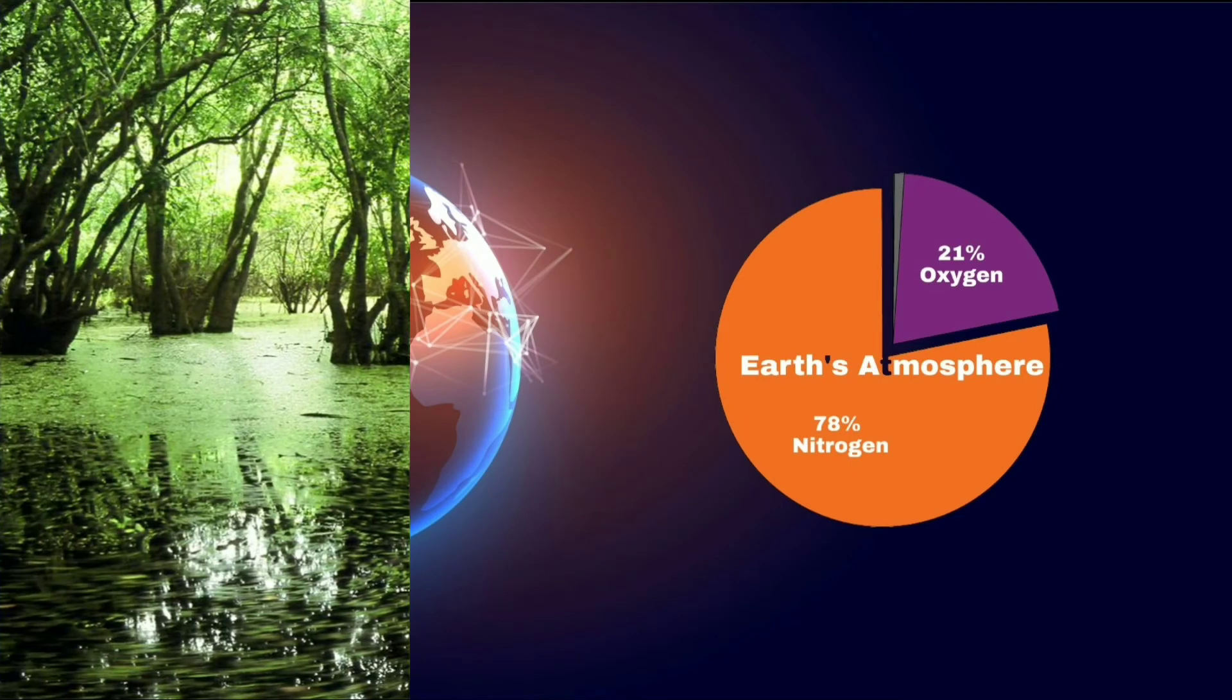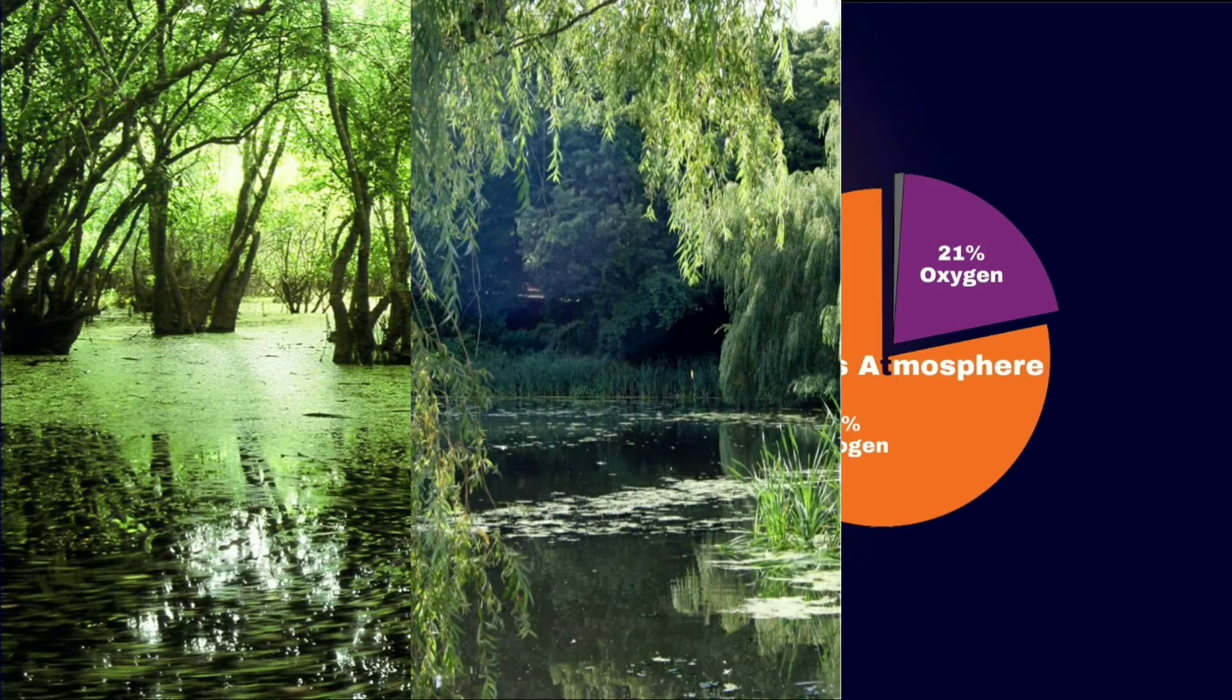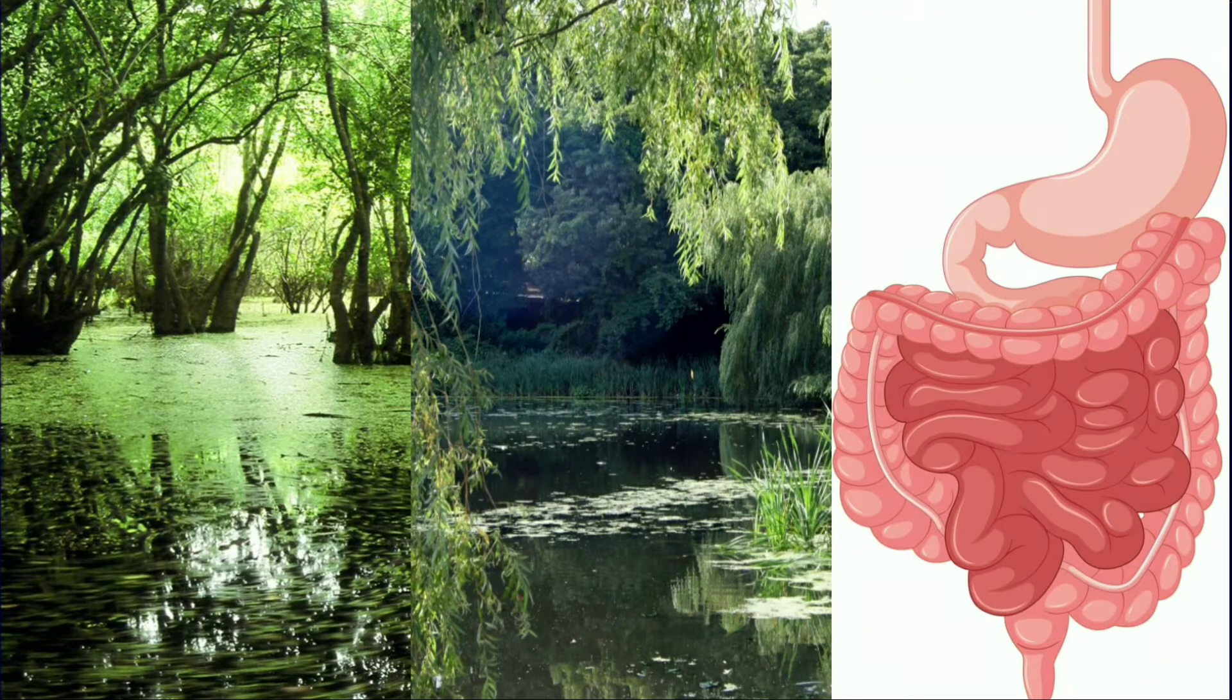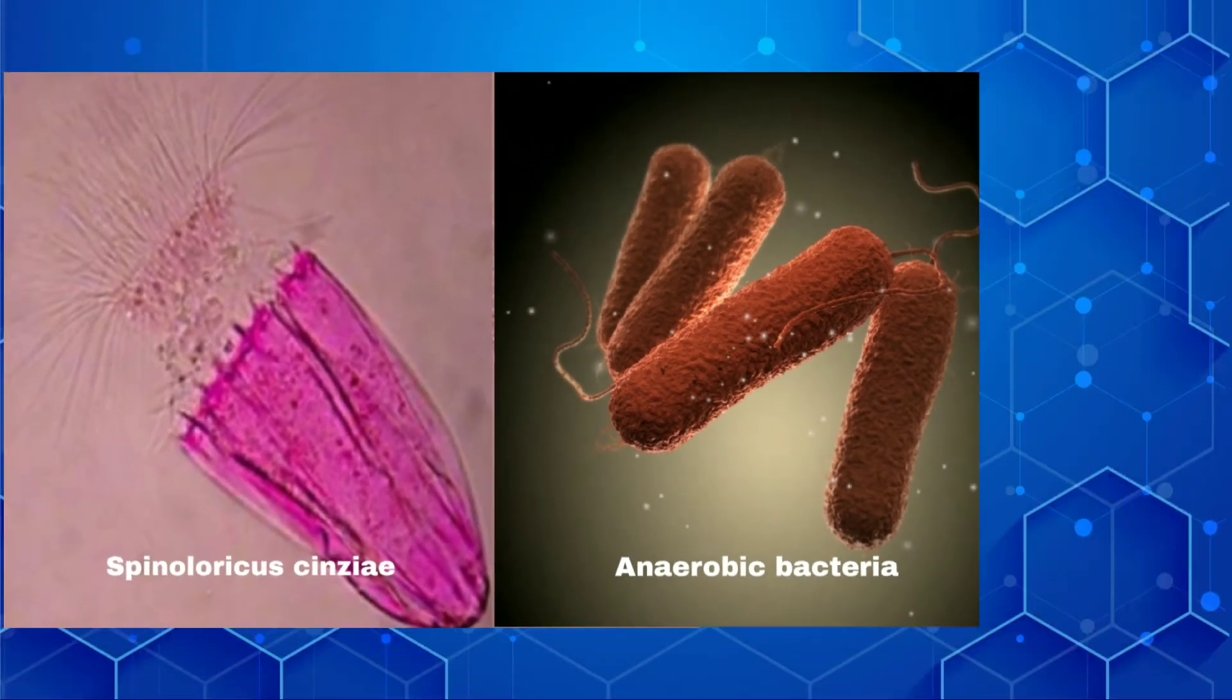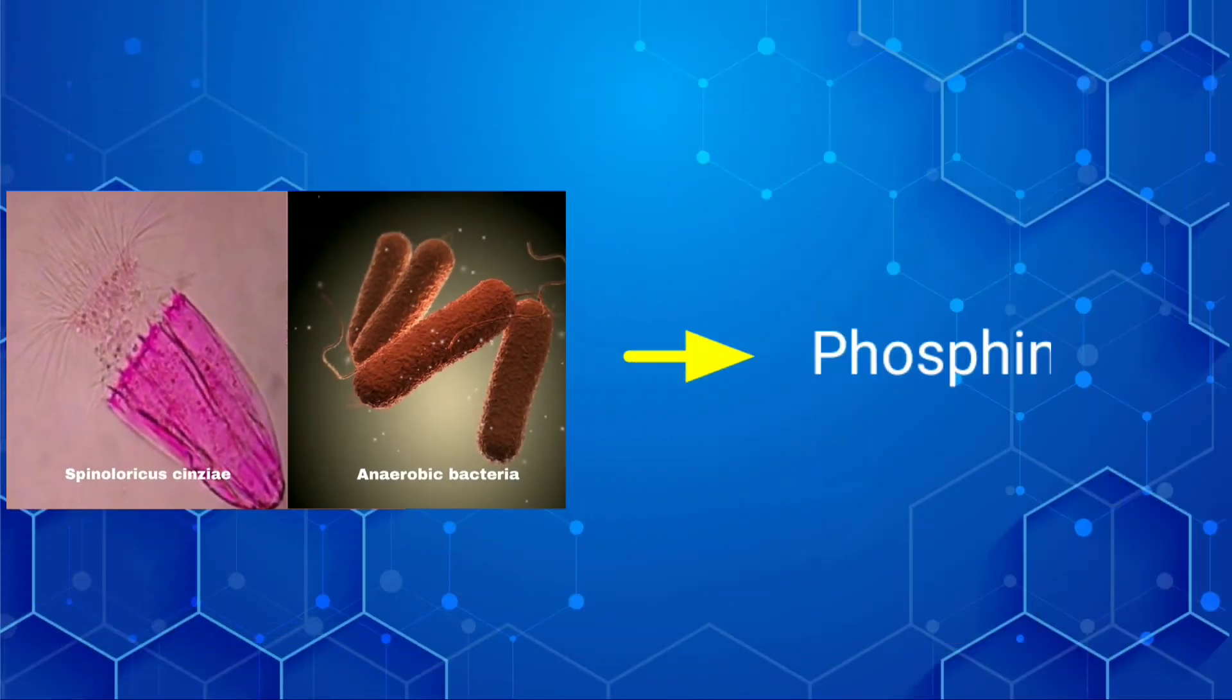Even on Earth which is full of oxygen, anaerobic life lives in swamps, marshlands and in the intestines of most animals. Anaerobics are those who don't use oxygen metabolism. They produce a lot of phosphine.